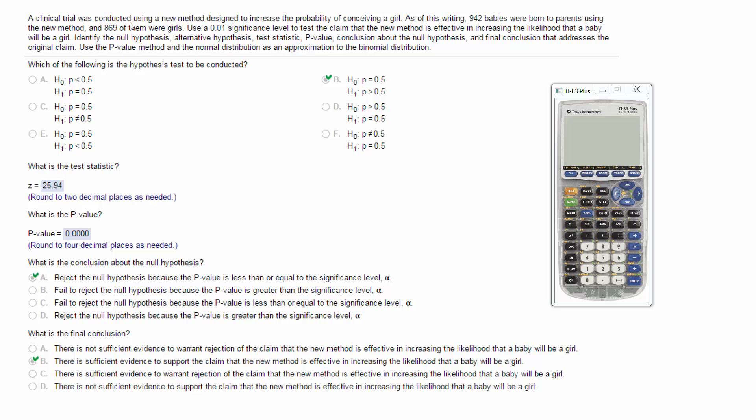A clinical trial was conducted using a new method designed to increase the probability of conceiving a girl. As of this writing, 942 babies were born to parents using the new method and 869 of them were girls. I want to use a 0.01 significance level to test the claim that the new method is effective in increasing the likelihood that a baby will be a girl.